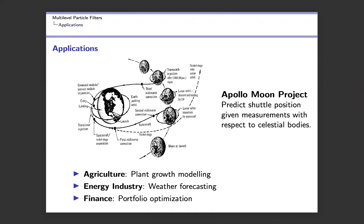The Kalman filter, the first tool from which particle filters and multilevel particle filters were developed, was formalized the first time in the NASA laboratories in the 1950s for the Apollo moon project, with the goal of predicting shuttle position given measurements with respect to celestial bodies. Nowadays, particle filters and multilevel particle filters are widely applied in many fields, like in agriculture for plant growth modeling, in the energy industry for weather forecasting, and in finance for portfolio optimization.